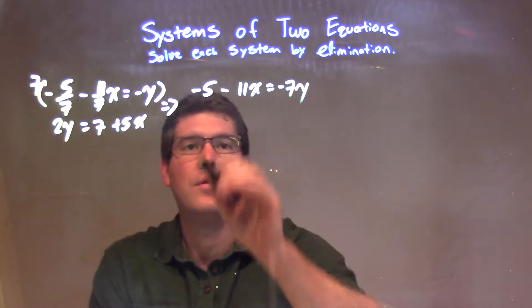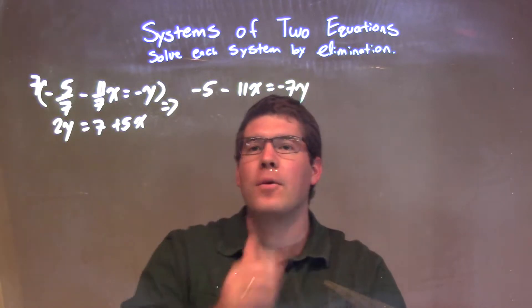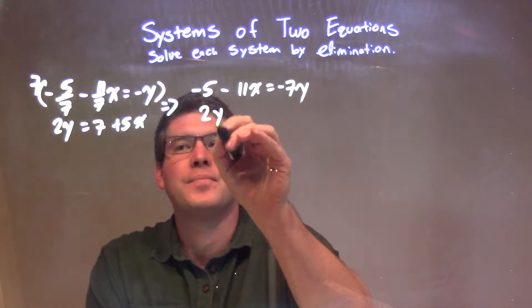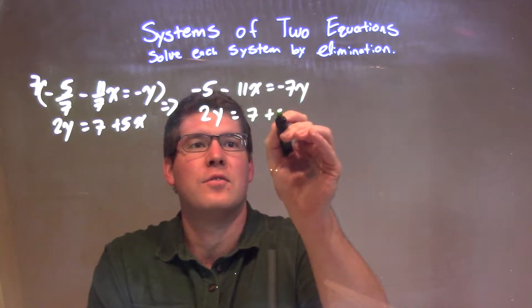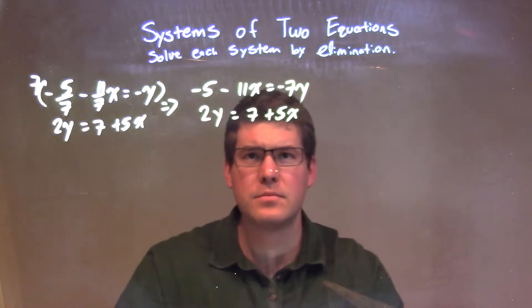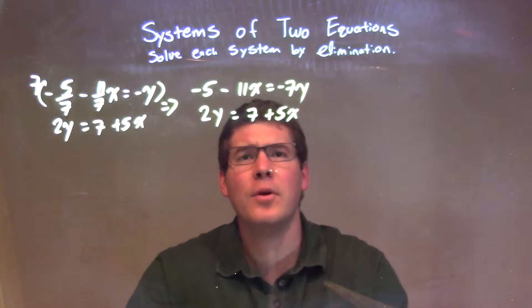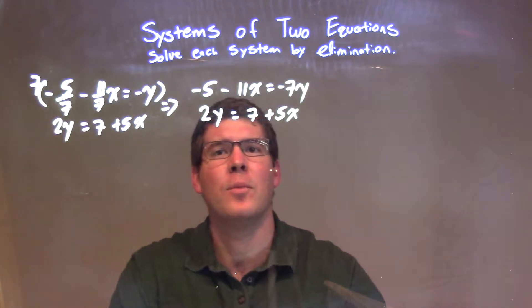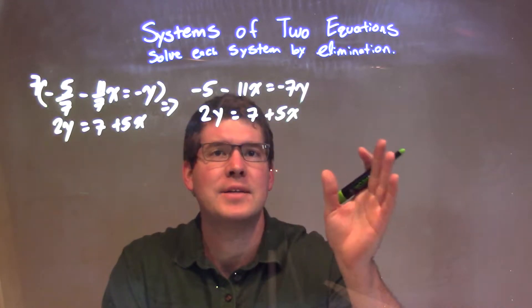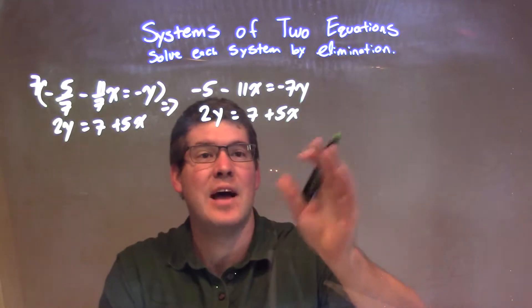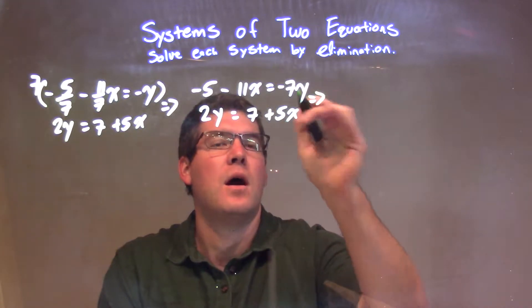I'm just going to bring the bottom one across: 2y equals 7 plus 5x. Now what I want to do is rearrange this to have all my numbers on the right-hand side and my letters on the left-hand side, my variables.